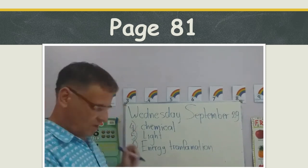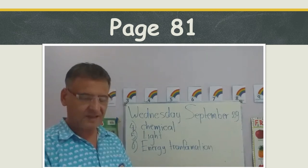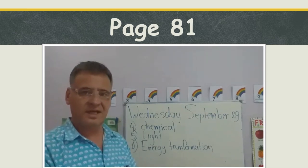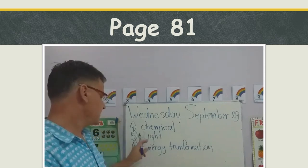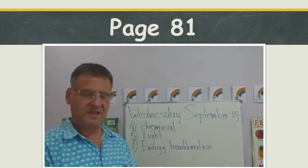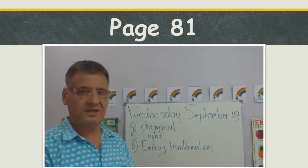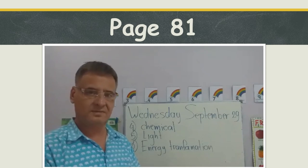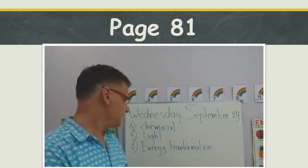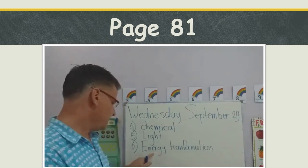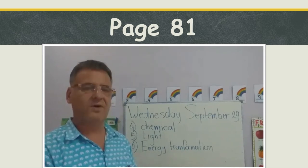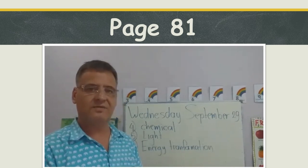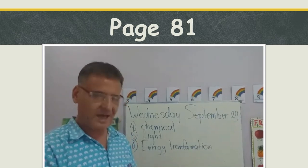One more time: number four — the petrol in cars contains chemical energy. Number five — light energy allows us to see the things around us. Number six — energy transformation is the change of a form of energy into other forms.